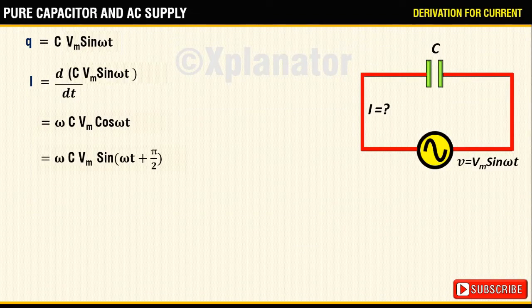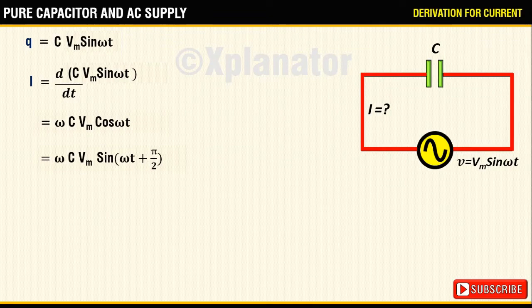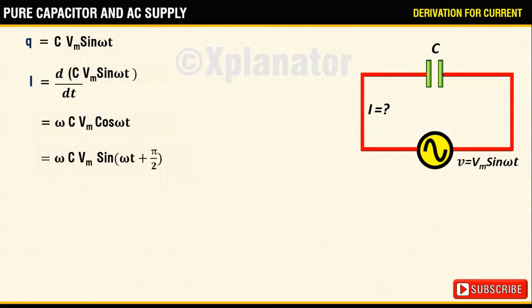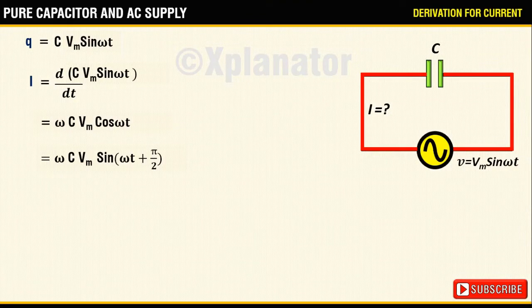So when you do that, equation for current i is given by omega C Vm sine of omega t plus pi by 2.